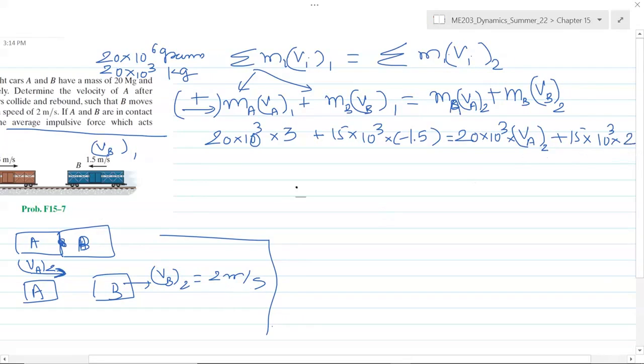Everything is known in this equation except v_A2, so we can calculate v_A2 by simply adding these two numbers, then subtracting this from there and dividing by 20,000. That number is 0.375, and the good thing is this number is positive. That means our assumption of A going right is correct. If we got this answer negative, that means A would rebound and travel in the left direction, but that's not the case.